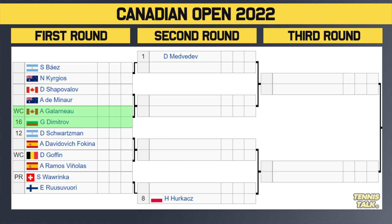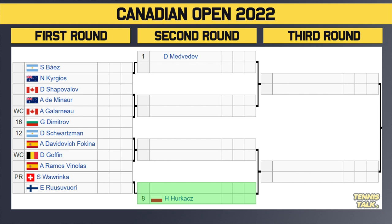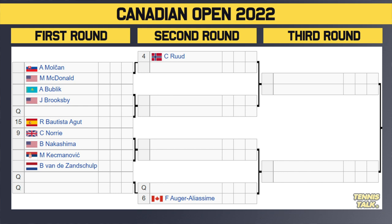Dimitrov taking on Medvedev could be a third round matchup. Then you've got Schwarzman taking on Fokina, Schwarzman the number 12 seed. Winner of that will take on either Ramos Vinolas or Goffin in the second round. Then you've got Stan Wawrinka taking on Ruusuvuori. Winner of that will play Hubert Hurkacz, the number eight seed, in the second round. That top section of the draw is stacked — very tough for both Medvedev and Hurkacz.